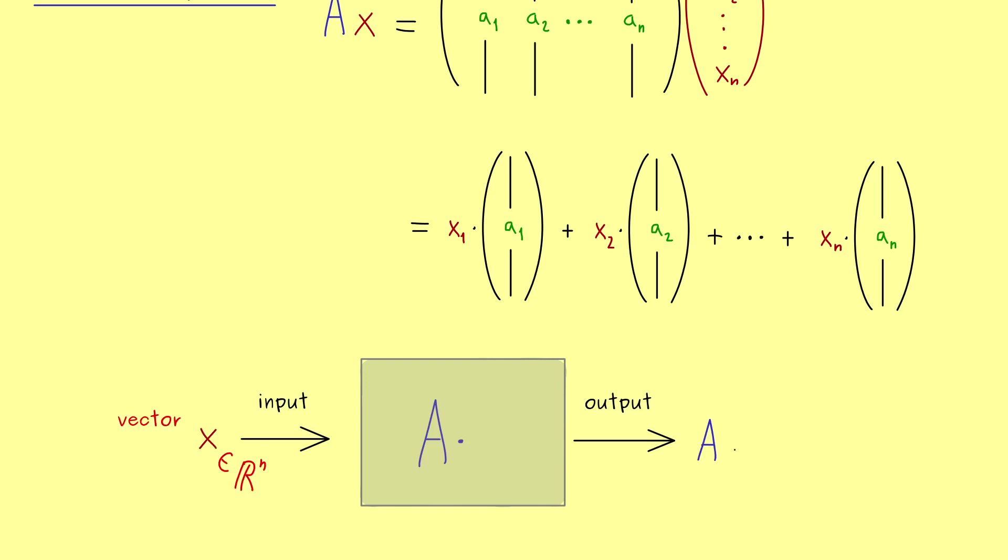And then the output is a vector Ax with m components. And now the important fact here is that this output vector here can be seen as a linear combination of the columns of A. And the factors, the scalars in this linear combination, are given by the components of the vector x.